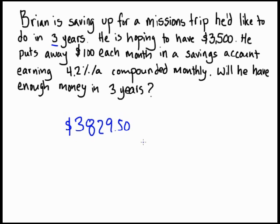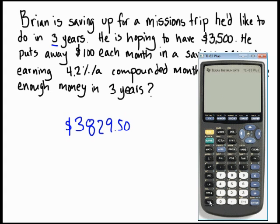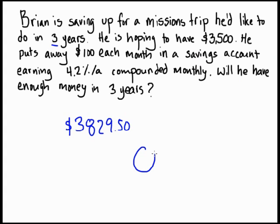Just to quickly recap: with regular payments, N is the number of payments. Annual interest rate as a percent — so 4.2%. He's not putting $2,000 into an account to see how much it'll be worth in three years, so PV is zero. Instead, he's putting in regular payments, and because he's giving that money away, PMT is negative. Payments per year is 12 since he's doing it every month, and compounds per year is also 12 because it's compounded monthly. Then you put the cursor on future value, go Alpha, Solve, and that gives you your answer.